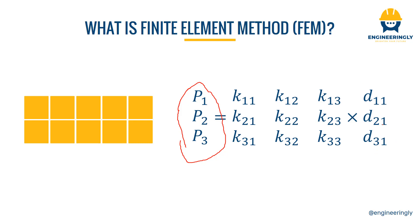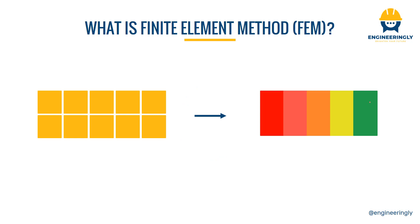If the displacement is unknown, we will divide the reactions matrix or the force matrix by the stiffness matrix, and we can obtain the amount of displacement at each of the nodes. Once this is done, we will again assemble the structure to form something like this.